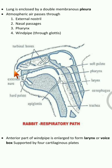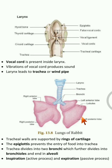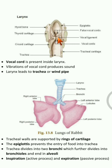So the passage is: external nostrils → nasal passages → pharynx → windpipe (trachea). In the trachea, before reaching it, there is a wider part called the larynx, or voice box. You can see this in the picture. The larynx is the anterior wider structure above the trachea, and inside the larynx, vocal cords are present.